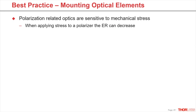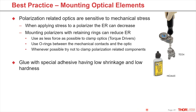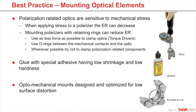I would like to point out that polarization-dependent optics are very sensitive to mechanical stresses. Especially polarizers dramatically drop in extinction ratio. Therefore, all mounting must be done with low force. The use of O-rings can help, and also the use of torque drivers should be considered. When gluing such components, look for adhesives with low shrinkage and hardness. And use mounting brackets that are designed to minimize stress on the optical components.